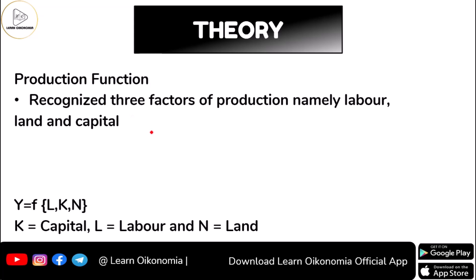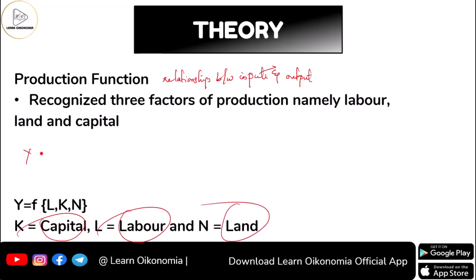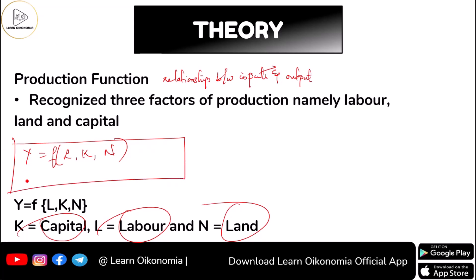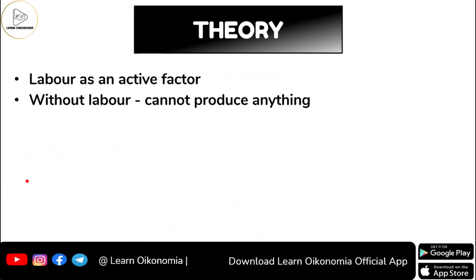Another important aspect is the production function. Smith tried to establish a relationship between inputs and output. The various inputs Smith used involved capital, labor, and land. As per Smith, output Y in the economy is a function of labor, capital, and land. He always identified the role of labor and believed in something called the labor theory of value.